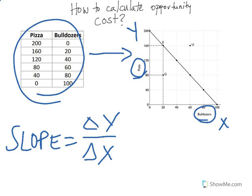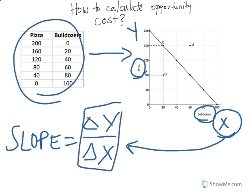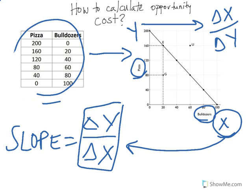To calculate the opportunity cost of the x-axis, we use this slope — the change in Y over the change in X. To calculate for the y-axis, we use the inverse: the change in X over the change in Y. That's important because a great source of confusion comes from trying to figure out which one comes first.